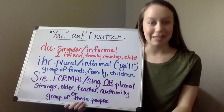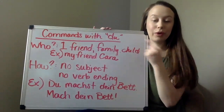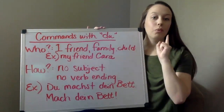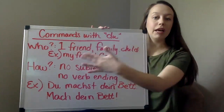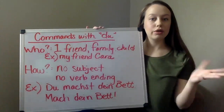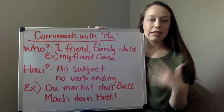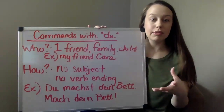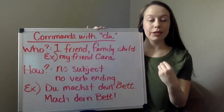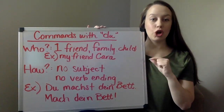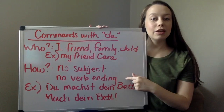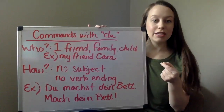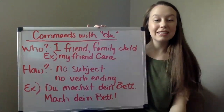Now let's talk about each of them separately and how to make a command, starting with 'du.' To review: 'du' commands are for one friend, one family member, or one child — my example is my friend Kara. How is it different from a regular sentence? It has no subject, just like in English when I say 'run' or 'stop.' And with 'du,' one special thing is that we take off the verb ending — the '-st' — so we're left with basically just the stem.